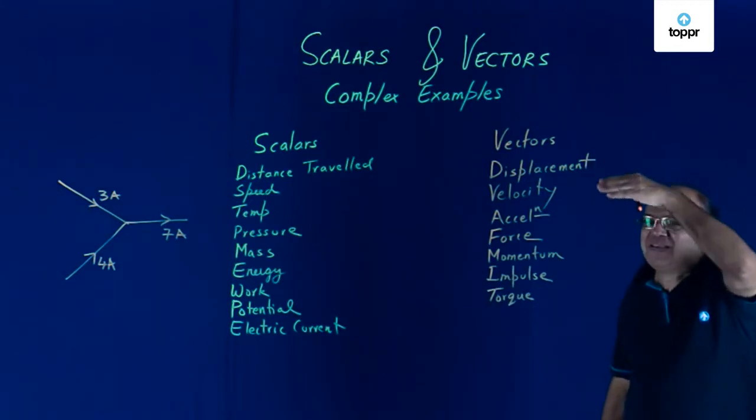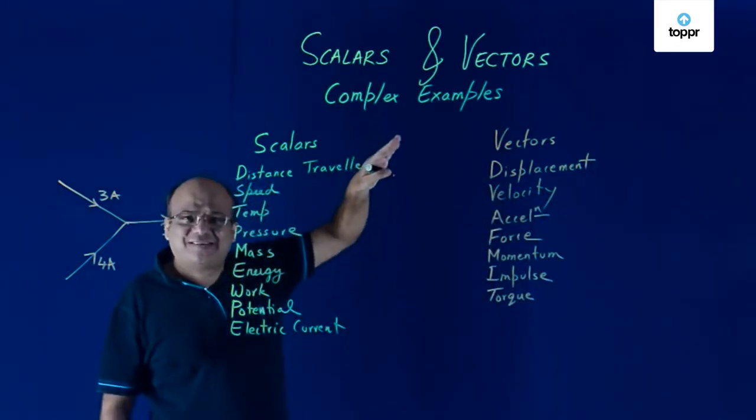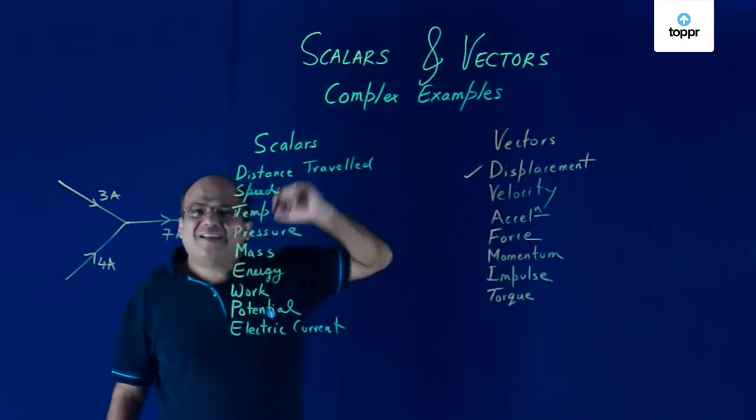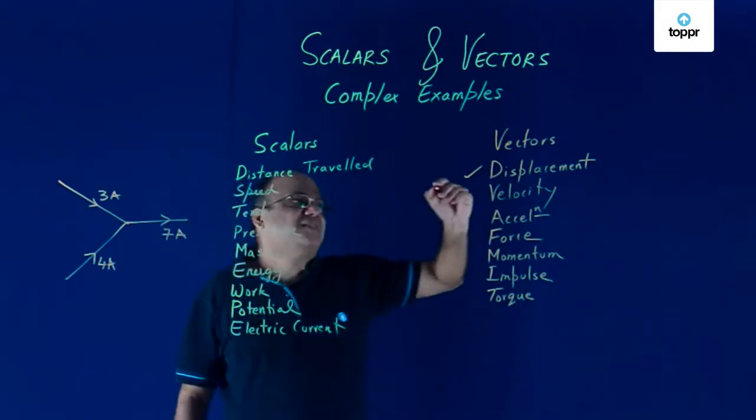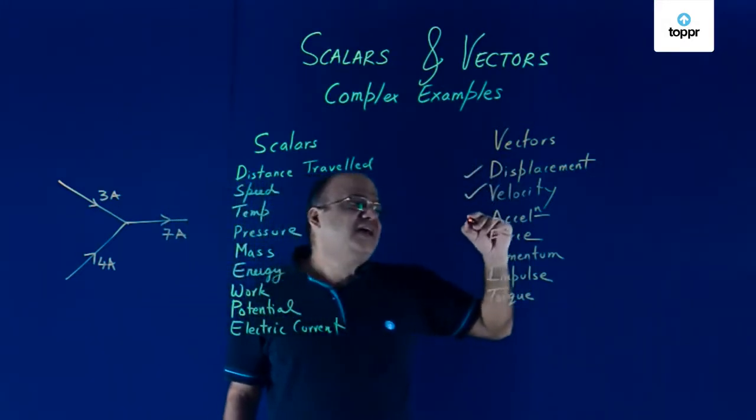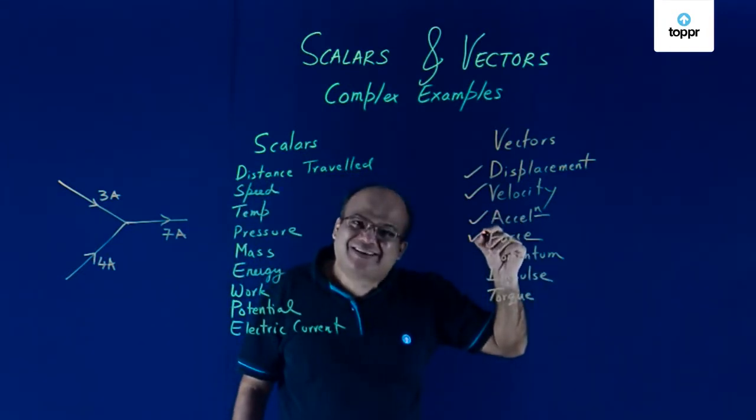So remember this example systematically then you will not forget. Vectors, first you think of displacement. So displacement is a vector. Displacement by time is velocity. That is a vector. Rate of change of velocity is acceleration. Acceleration is a vector. Force is mass into acceleration. That is a vector.